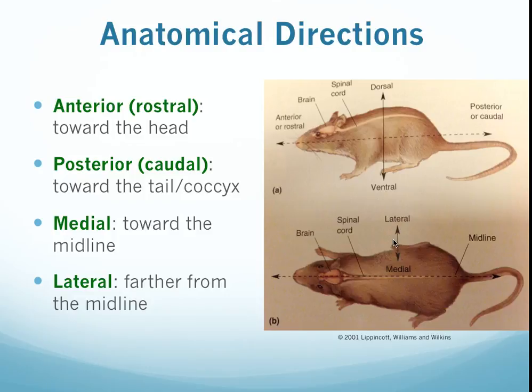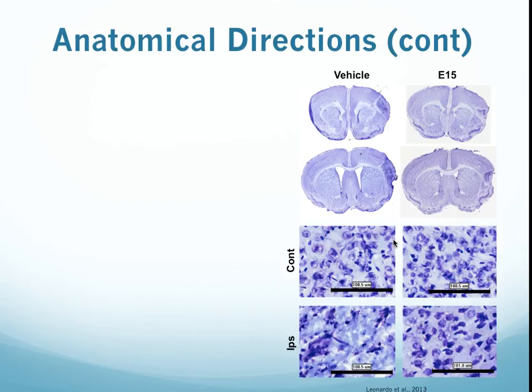These words are useful when we're trying to describe whereabouts in a brain section we might be looking. For example, we might have some damage that's just medial to the lateral ventricle. So if we know what the lateral ventricle is and can identify that structure, and we know which direction medial is, we have some general idea of where we're supposed to be looking.